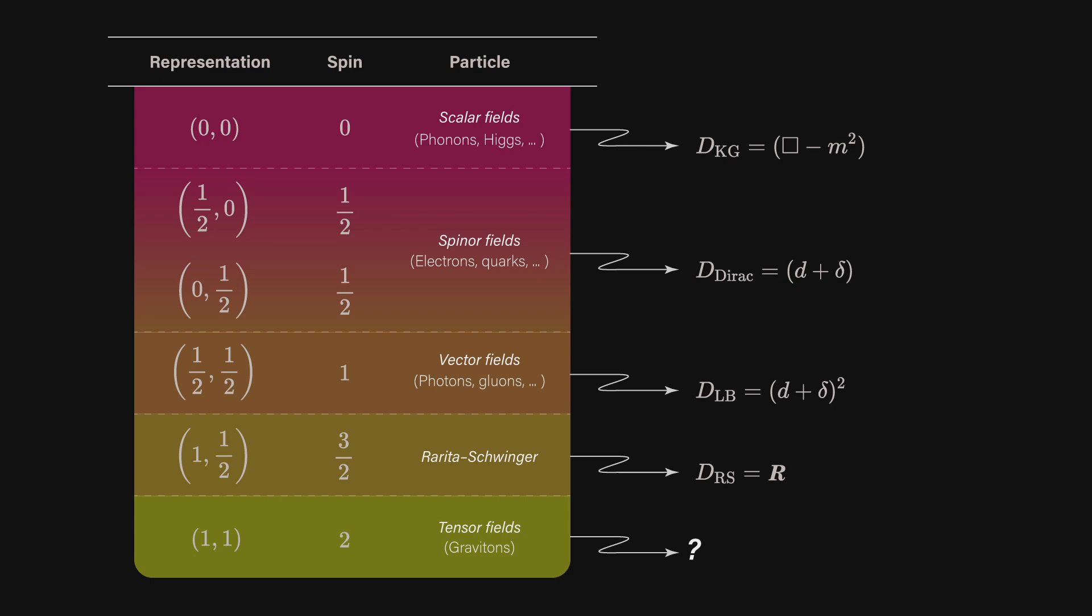For spin 0, we have scalar fields that obey the Klein-Gordon operator, which is intuitively the d'Alembertian wave operator proportional to some mass. So the field wiggles with more difficulty the heavier it is, but carries only its magnitude. For spin 1/2 of either right or left chirality, we have spinor fields that obey the Dirac operator in the full case, or the Weyl or Majorana equations in either spin 1/2 to 0 case.